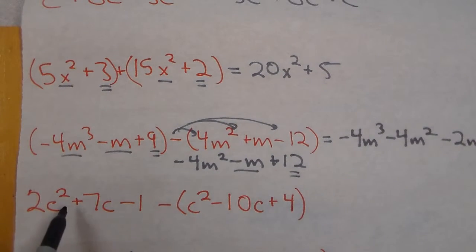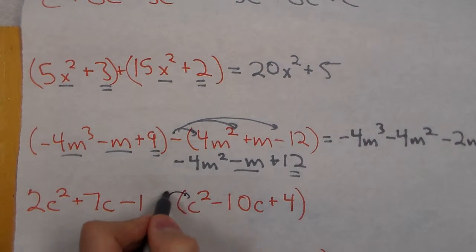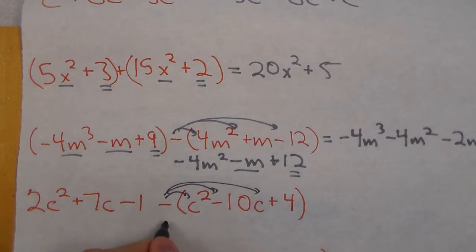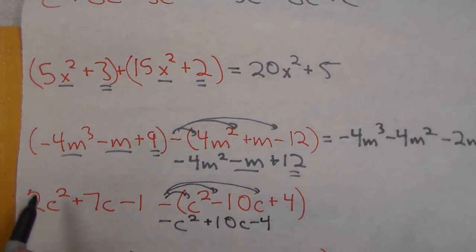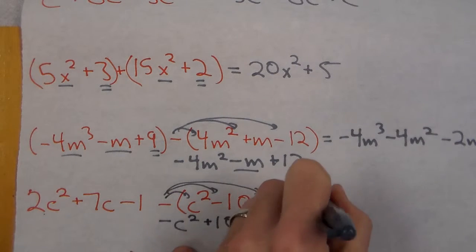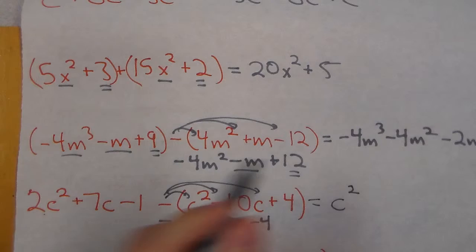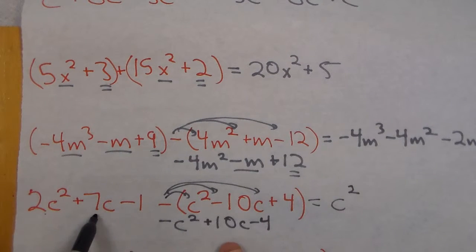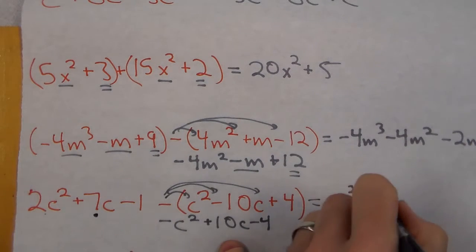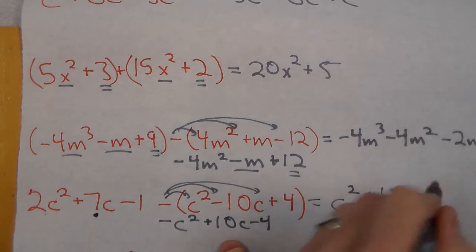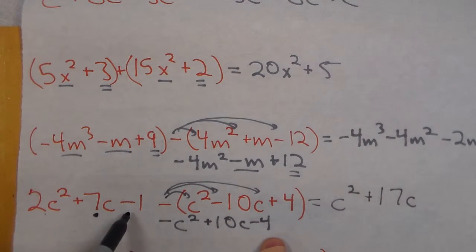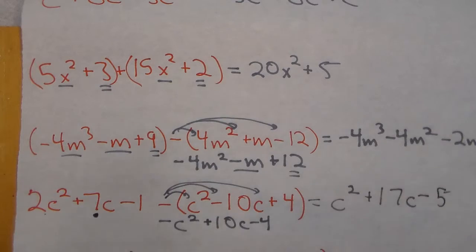Now for this one I've dropped the parentheses off the front but the second part still is subtraction. I would still recommend distributing in the negative because now it's negative c² plus 10c minus 4. And now I can look at like terms. I have a 2c² minus 1c² which would just be a c². We have a 7c and a 10c. That would be 17c. And then a negative 1 and negative 4 gives us negative 5.